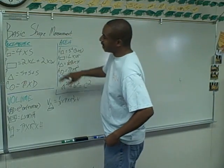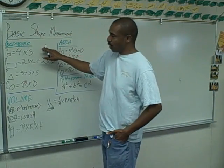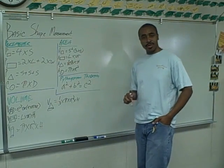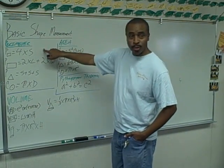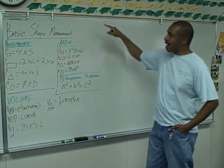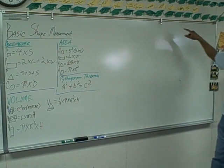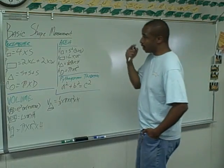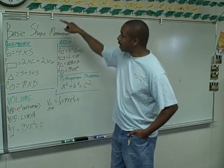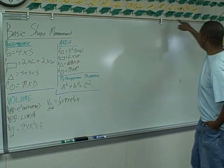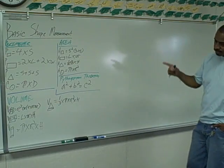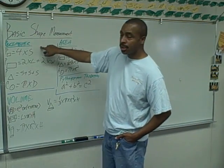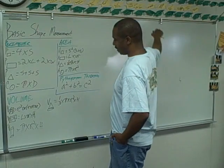So, basic shape measurement. We're going to focus on four areas tonight. We're going to focus on perimeter. Perimeter is the measure of the outside of an area. So let's just use this board as our example. If I'm talking about perimeter, I'm talking about the distance around this whiteboard — only the outside, just the edge.